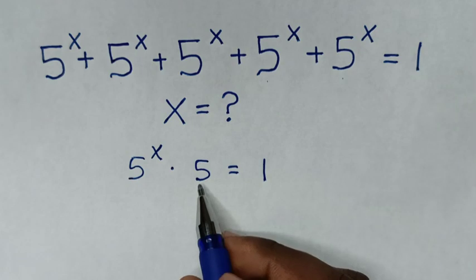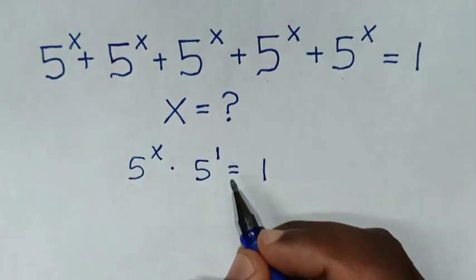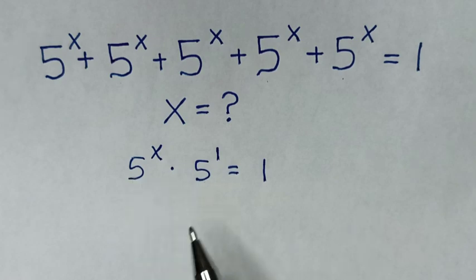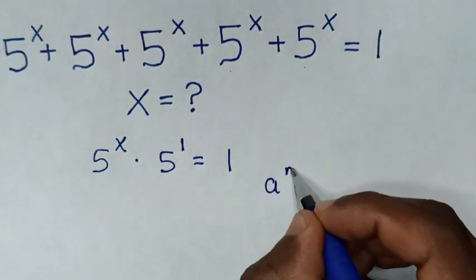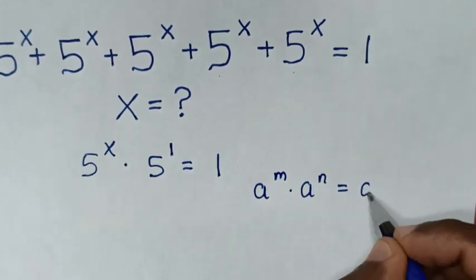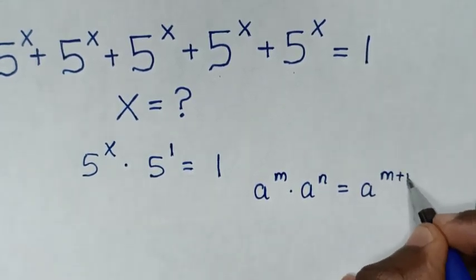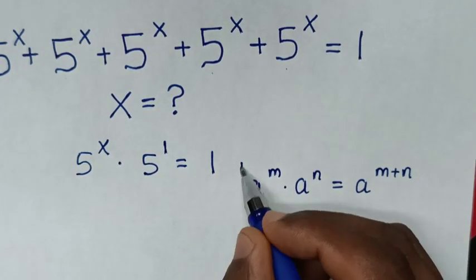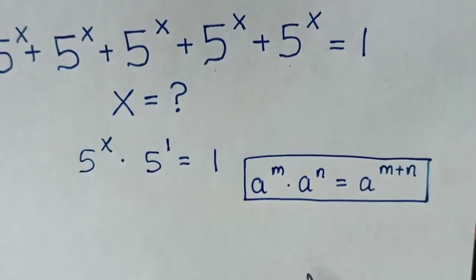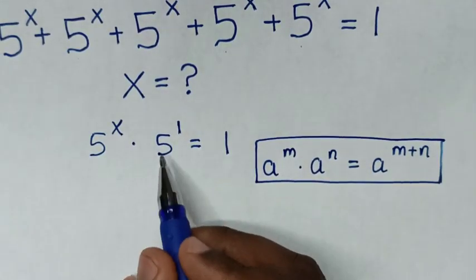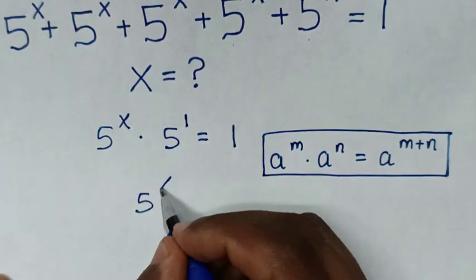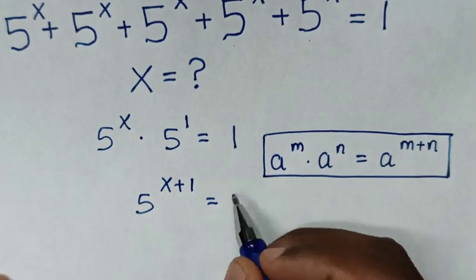In the next step, this 5 is the same as 5 power of 1. We have multiplication of exponents with the same base of 5, so we apply the rule: a power of m times a power of n is equal to a power of m plus n. Our equation becomes 5 power of x plus 1 is equal to 1.